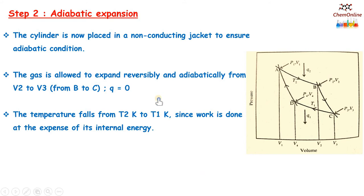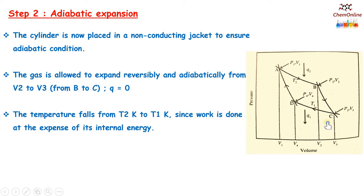The second step is adiabatic expansion. The cylinder is placed in a non-conducting jacket to ensure adiabatic conditions. The gas is allowed to expand reversibly and adiabatically from volume V2 to V3, that is from B to C on the graph. Since it is an adiabatic process, there is no heat flow in or out of the system (Q equals 0). When an ideal gas undergoes reversible adiabatic expansion, the temperature falls from T2 Kelvin to T1 Kelvin, because work is done at the expense of its internal energy.